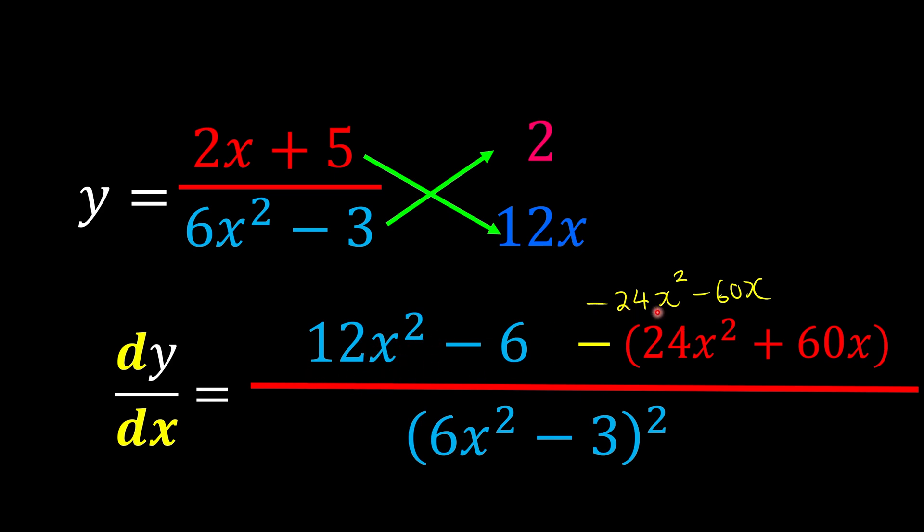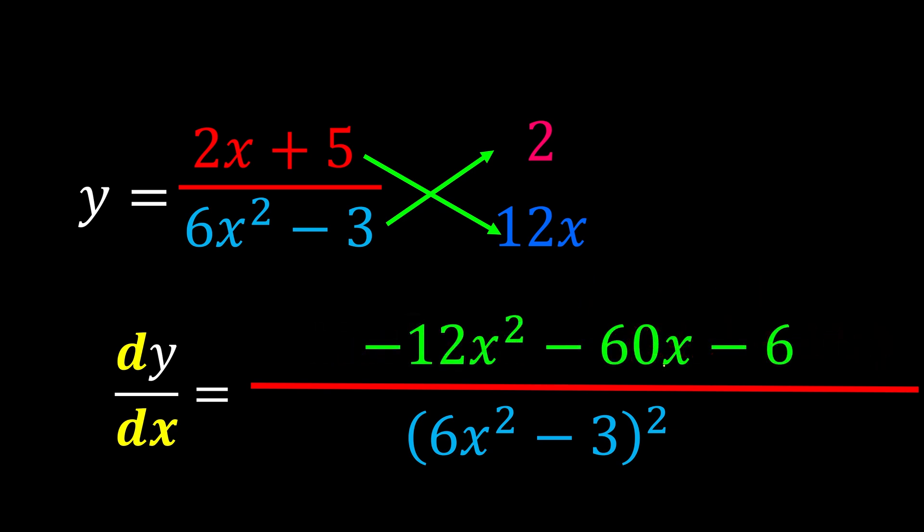12x squared minus 24x squared, we're left with negative 12x squared. So this is the result that we will get.